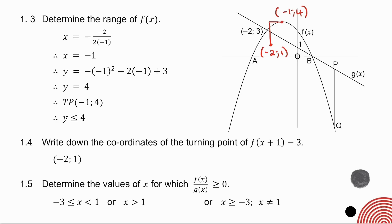Question 1.5 asks you to determine the values of x for which f of x over g of x is greater than or equal to 0. To get something positive, I need a positive divided by a positive, or a negative divided by a negative. Looking at the two graphs, the parabola is positive in one region and the straight line is positive in another. They're both positive between a and b, and they're both negative where the parabola is negative and the straight line is negative.